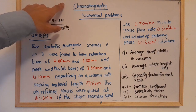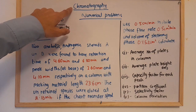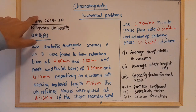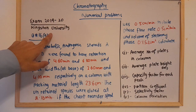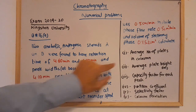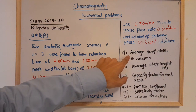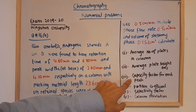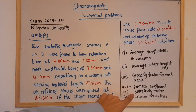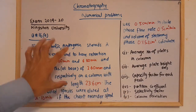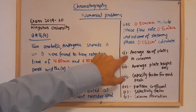Welcome to our channel. Today we'll be discussing chromatography and we will solve a numerical problem from the exam paper of 2019-20 from Kingston University. You are asked to find out the values of average number of plates, average plate height, capacity factor, partition coefficient, selectivity factor, and column resolution.